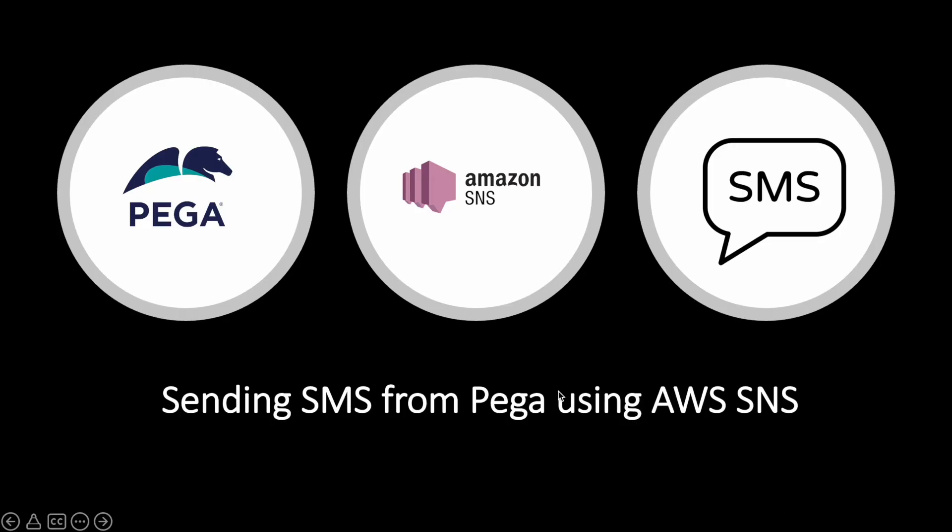Hello everyone, good evening. Today we are going to see sending SMS from Pega using AWS SNS. This is a very small topic but very useful in the current world. We are using multiple factor authentication with mobile SMS OTP to verify your identity, be it for password reset or for any transactions.